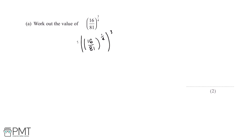This works because to simplify this back down we would need to multiply the quarter by 3, and this would take us back to the original value. So now to start off this question we'll do 16 over 81 to the power of 1 over 4.